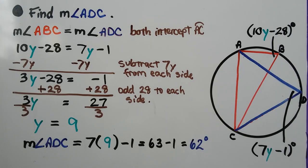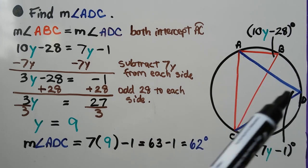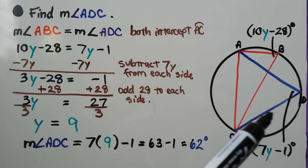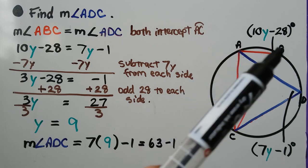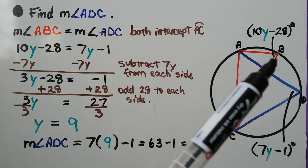Now it wants us to find the measure of angle ADC, that would be this one right here, the 7y minus 1 degrees. The measure of angle ABC, this one,